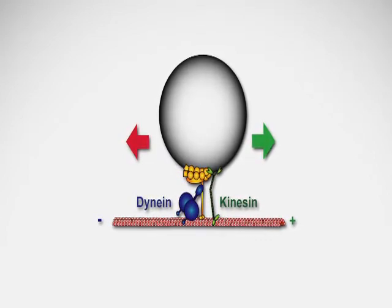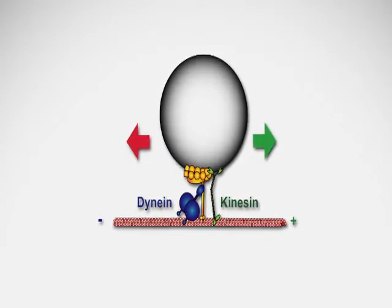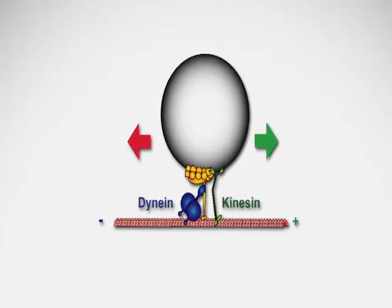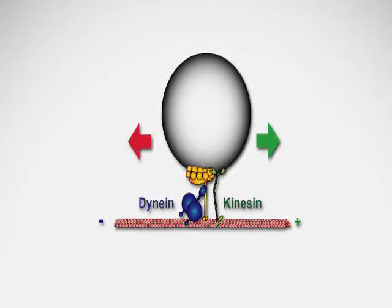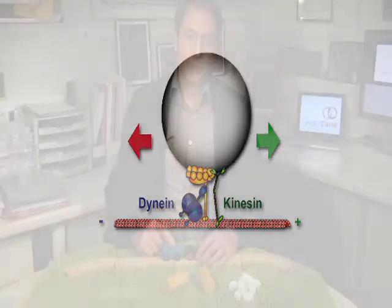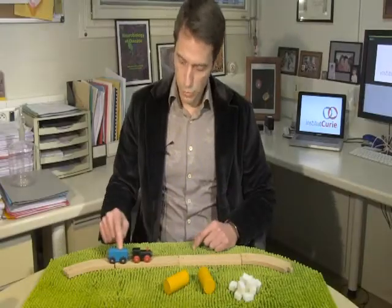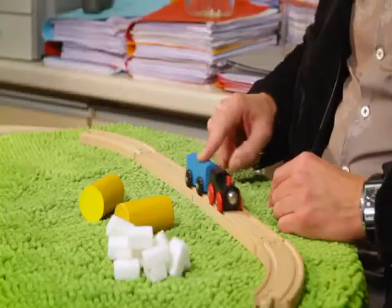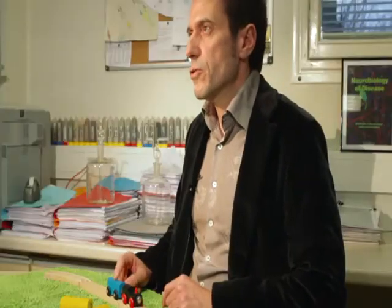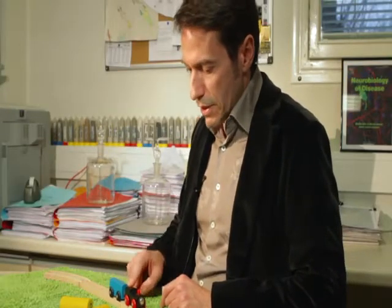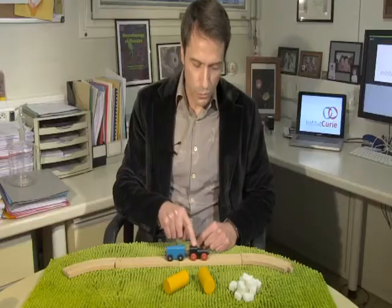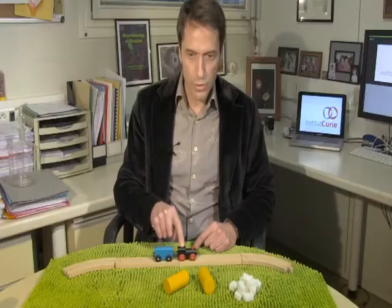Dynein is the retrograde motor that transports vesicles to the cell bodies. Both motors require ATP to function. If we conceptualize the transport of vesicles along microtubules as a little train, one fundamental question is: where does ATP come from to fuel the molecular motors?